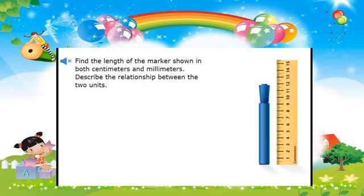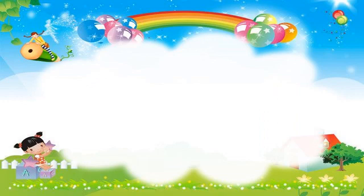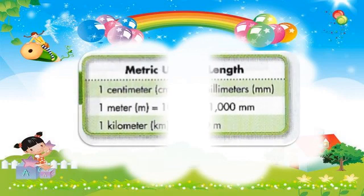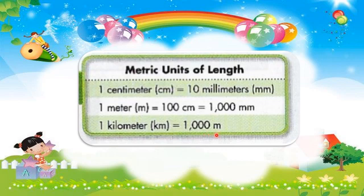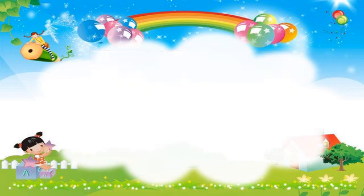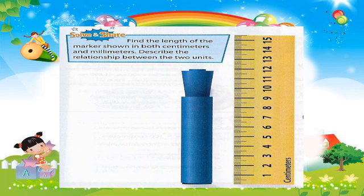Find the length of the marker shown in both centimeters and millimeters, and describe the relationship between the two units. Bear in mind the conversion table of metric units of length. We have: one centimeter equals 10 millimeters, one meter equals 100 centimeters, and one kilometer equals 1,000 meters. Now let us solve the problem. First, we measure the marker with the ruler, and as you can see it is 12 centimeters.